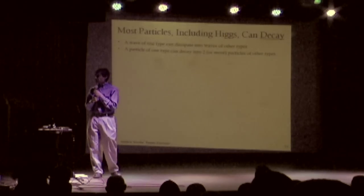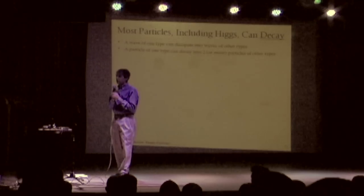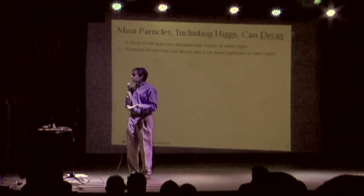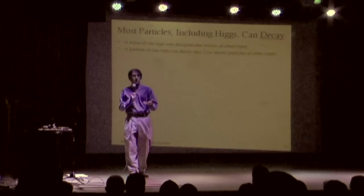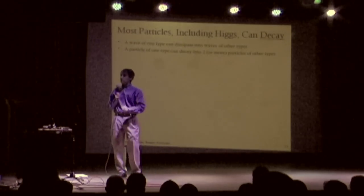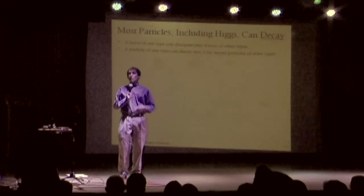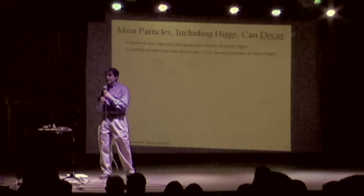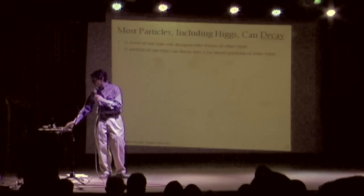So, for example, a Z particle. Now, if you have a wave, as we've seen, it can dissipate. In this case, I had waves and a piece of metal that were dissipating into sound waves. Well, particles can dissipate in a similar way. They decay into particles of other types.